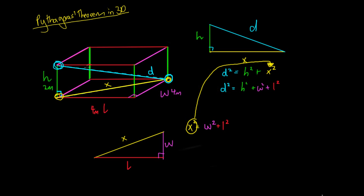So what we can see now is that d squared is actually just equal to height squared plus width squared plus length squared. Then if we want just the length of that side, we take the square root of both sides, giving us d equals the square root of h squared plus w squared plus l squared. It simplifies down into this nice little formula.